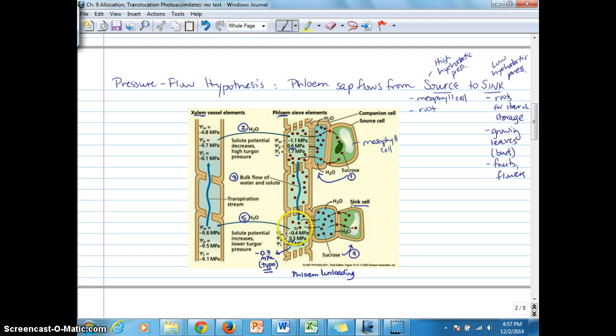If we compare what's happening at the sink end of phloem, we have a sink cell shown here, perhaps this is a root cell taking up sucrose to store it. We see the sucrose moving out of the sink end of phloem across the companion cell into the sink cell. The sucrose concentration is declining in this sink end of the phloem. As sucrose concentration goes down, the osmotic potential increases compared to at the source end. We see negative 1.7 osmotic potential in the source end and now negative 0.7 megapascals at the sink end.